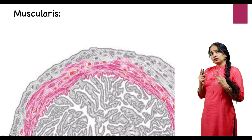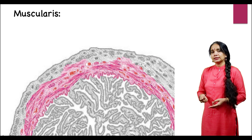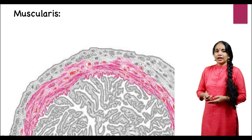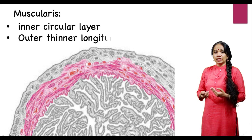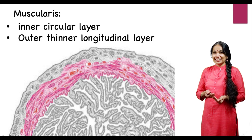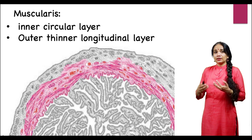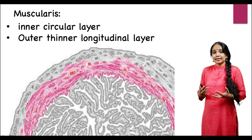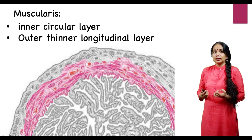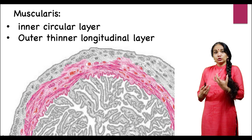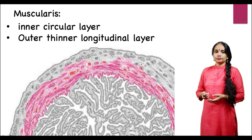The muscularis basically consists of two layers of muscle. On the outside we have a longitudinal layer, which is thinner, and on the inside we have a relatively thicker circular layer. This is what helps the fallopian tube to move.